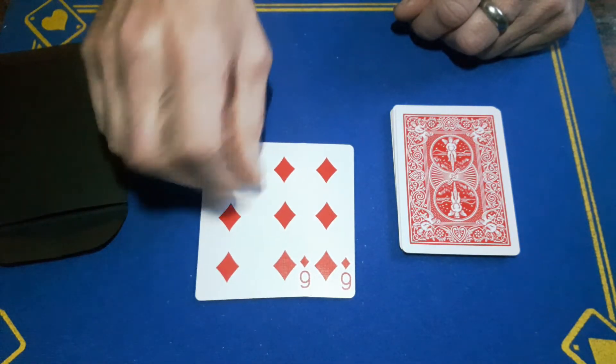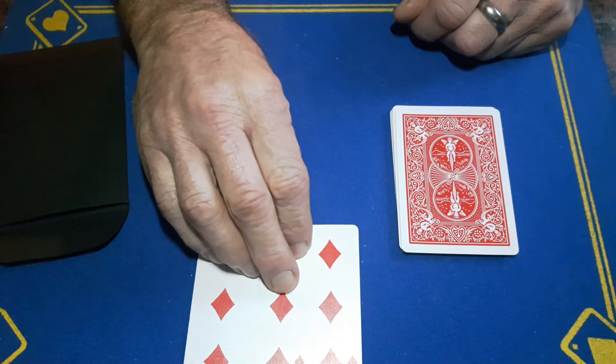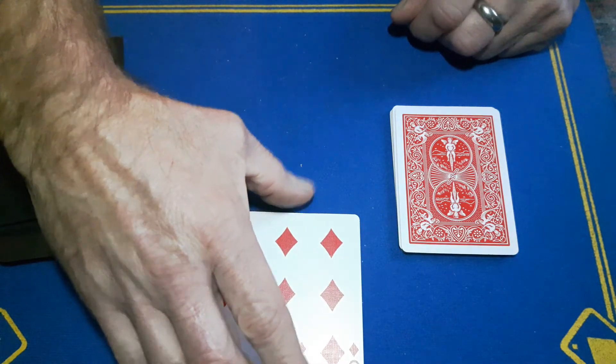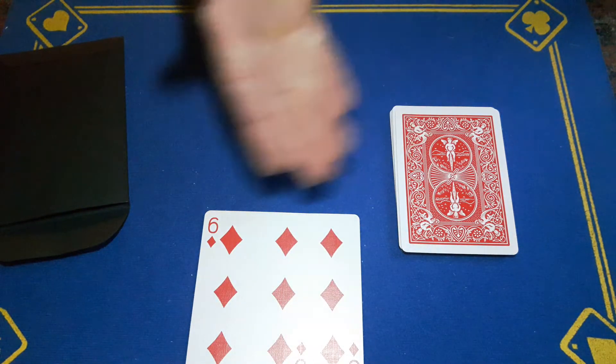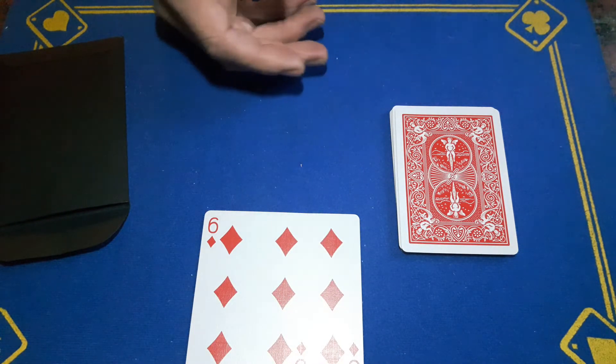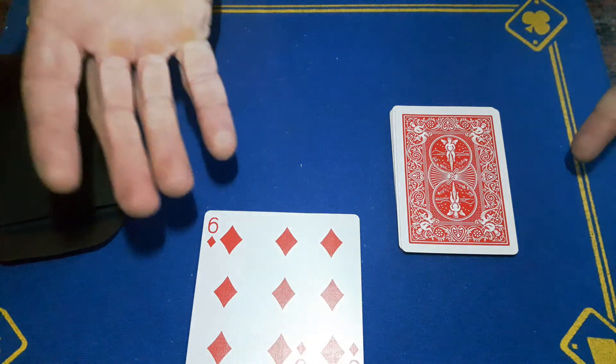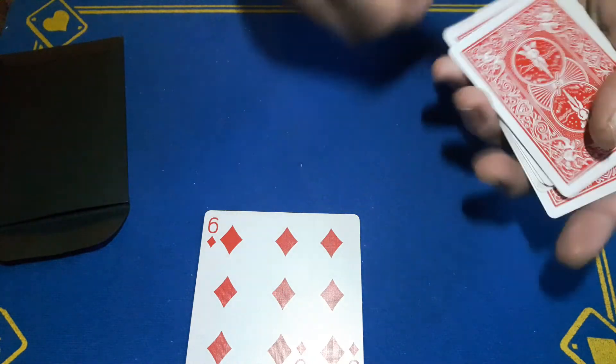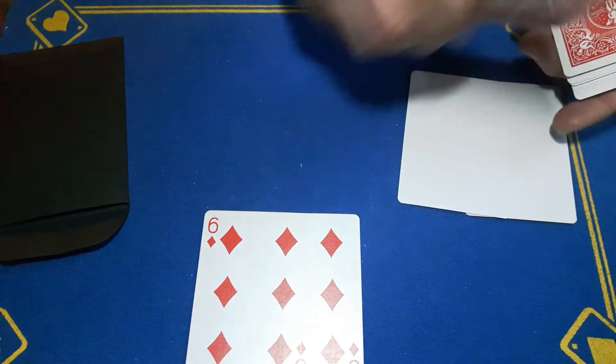And we've got another six of diamonds. So that is a trick, guys, but you are probably wondering, yeah Gaff, we didn't see the faces at all. Well, I've got to confess they are all the same card, but they are all in fact blank.